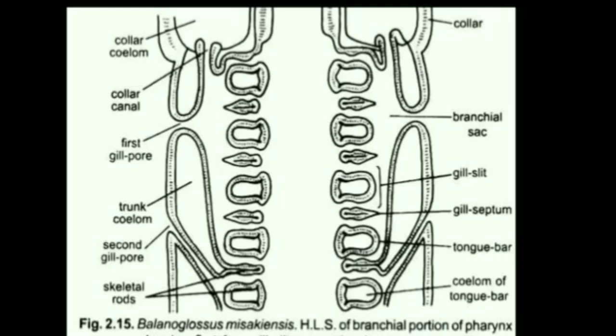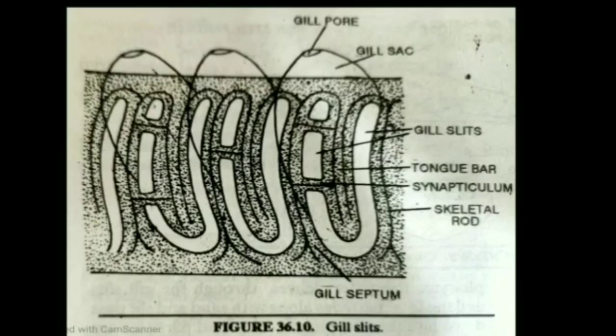The gill pores or branchial pores are visible in the diagram — you can see the first and second gill pore labeled on the left-hand side. In another view, the gill sacs are very clearly visible. They open to the outside by gill pores and communicate with the pharynx by gill slits.